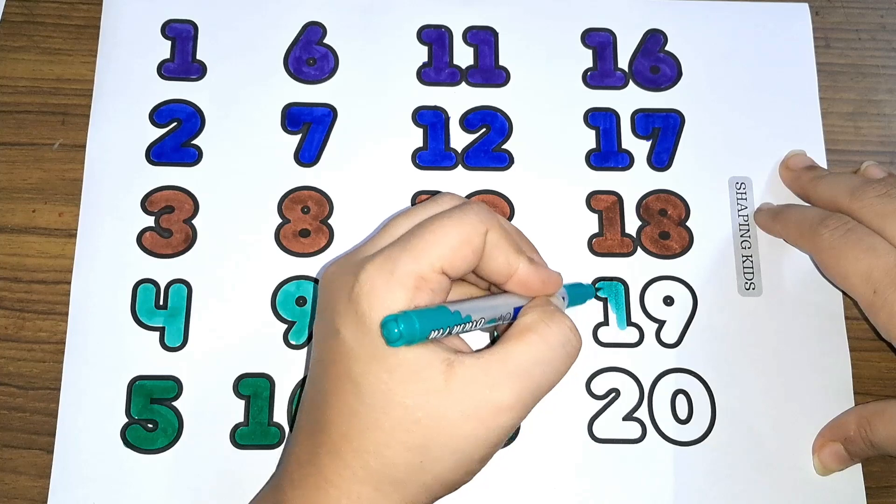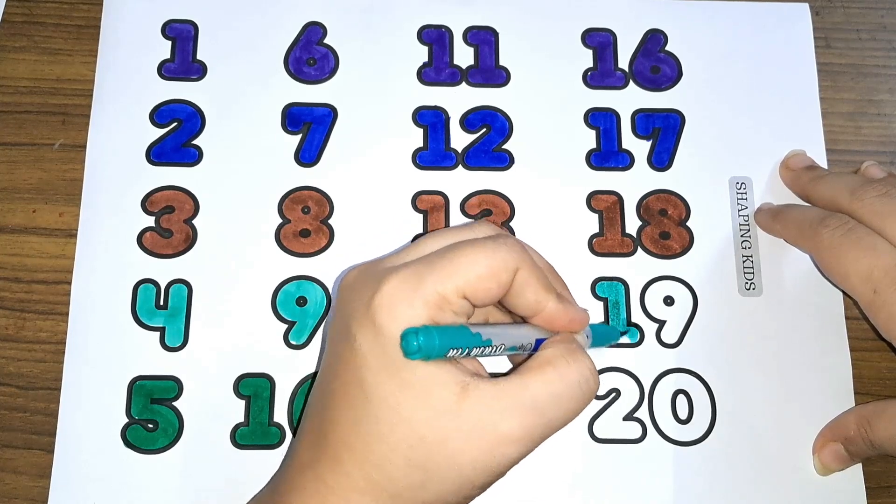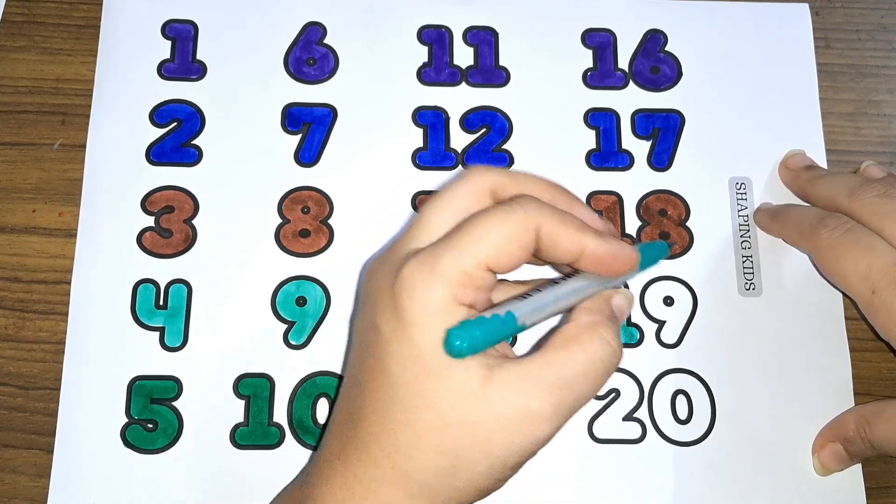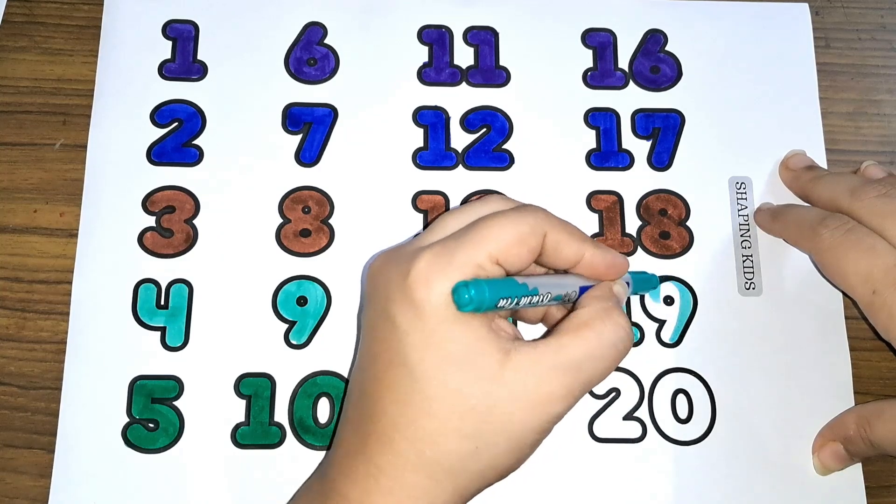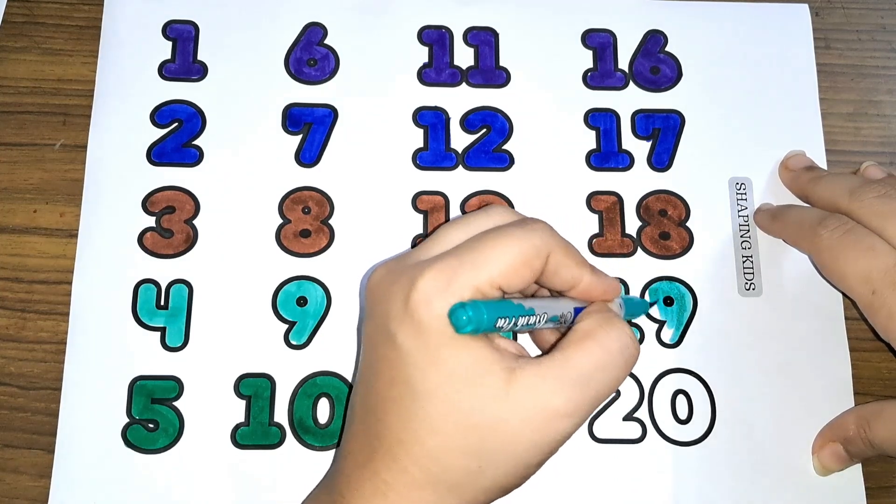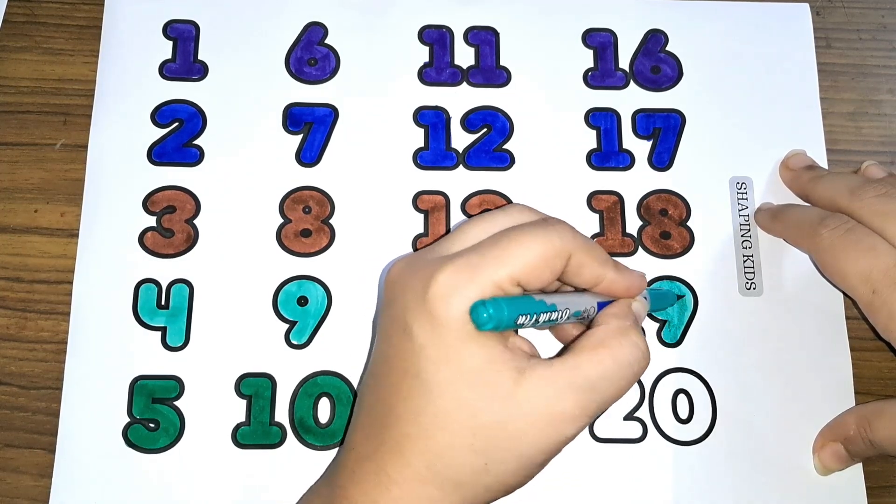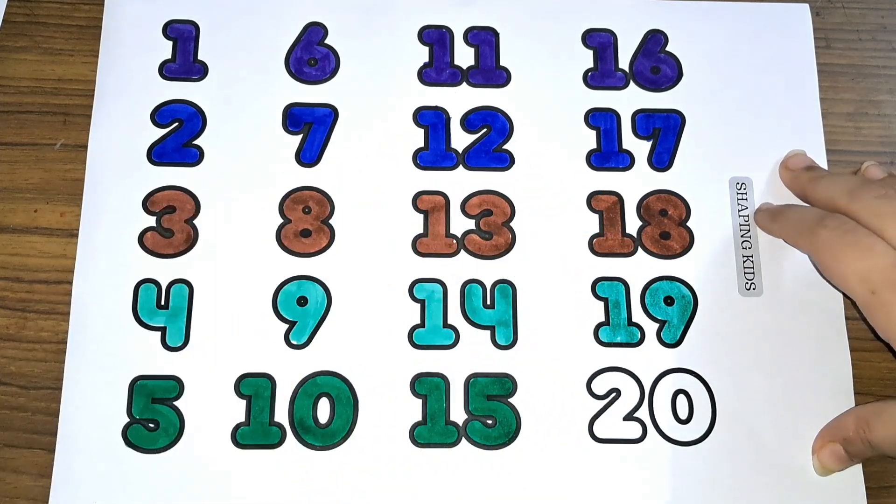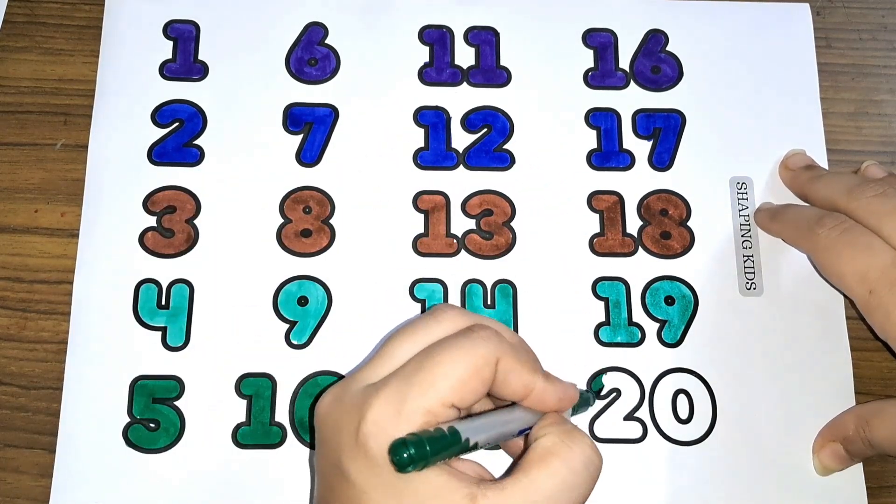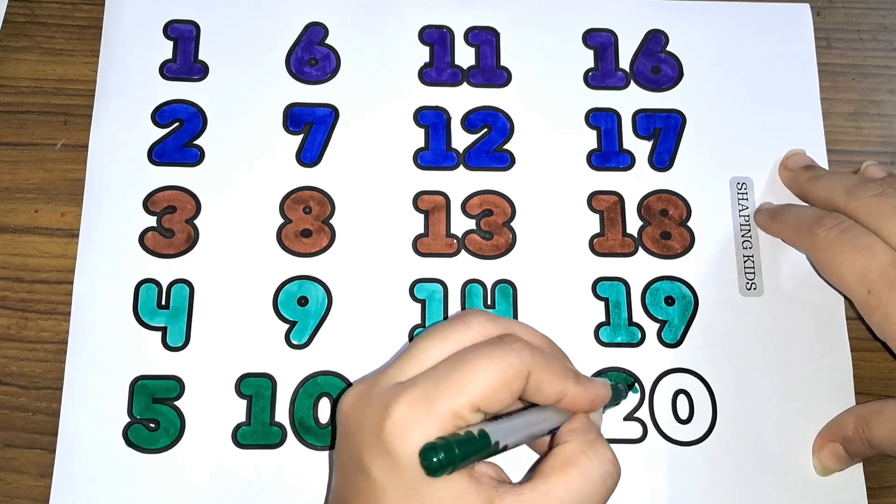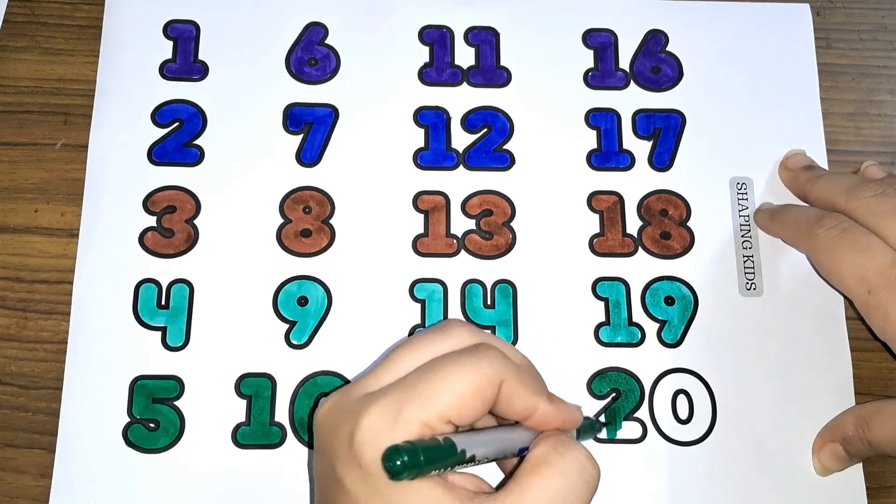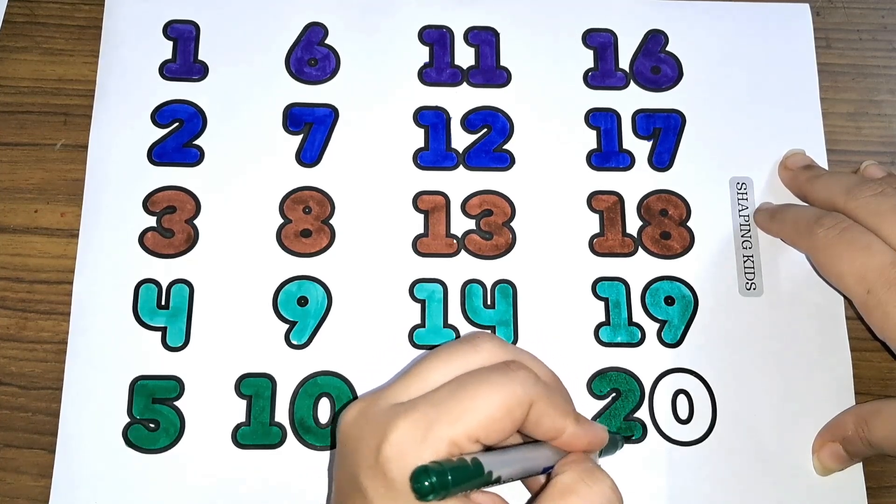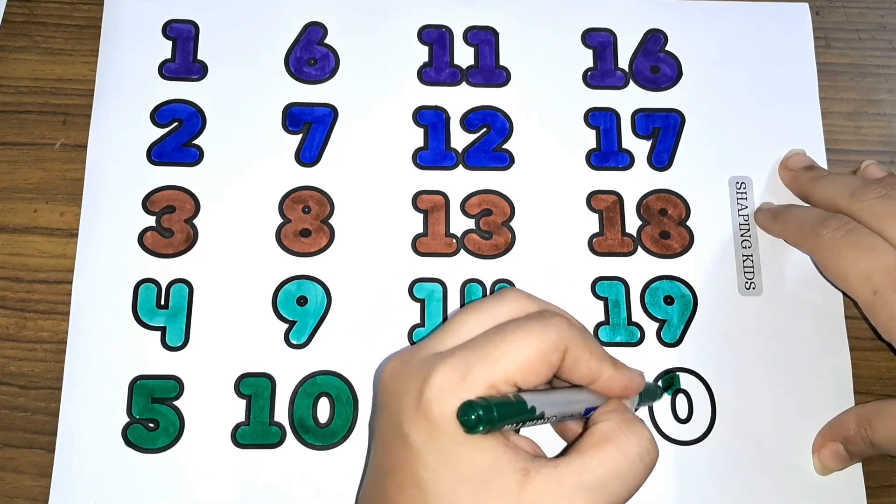Nineteen. One, nine, nineteen. One, nine, nineteen. Twenty. Two and zero, twenty. Number twenty.